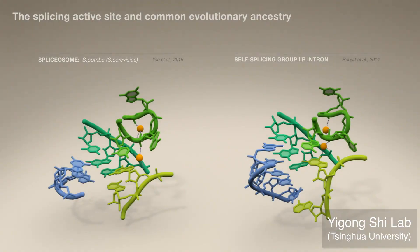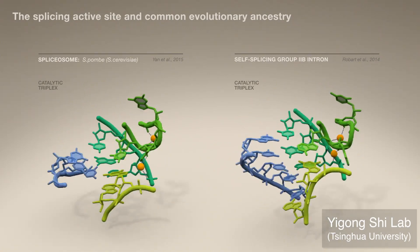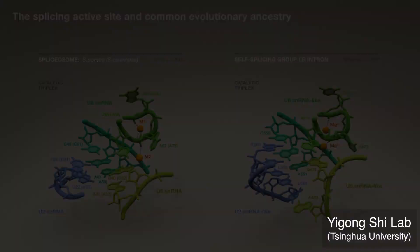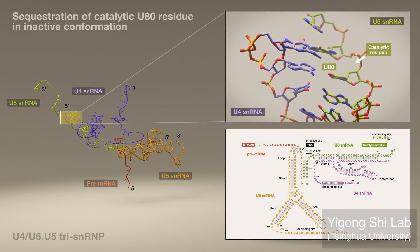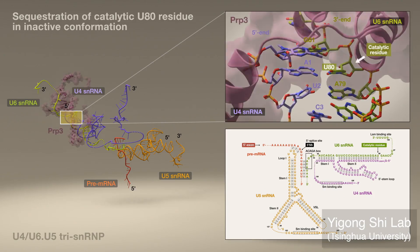The heart of the spliceosome is the active site, whose positioning of the catalytic magnesium ions and RNA residues suggests that it shares common evolutionary ancestry with the self-splicing intron. In the tri-snrp, the U80 catalytic residue is held in an inactive conformation via sequestration in the U4-U6 duplex, where coordination of magnesium ions is prevented, and via PRP3 protein, which binds this region.